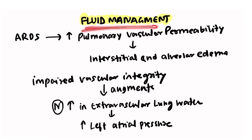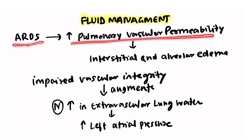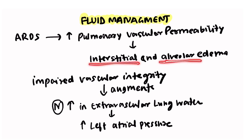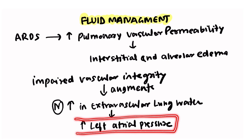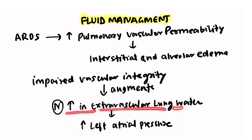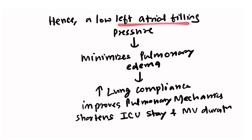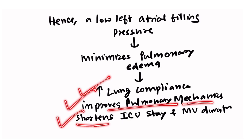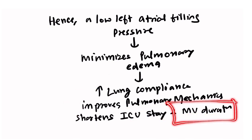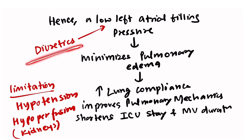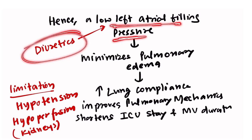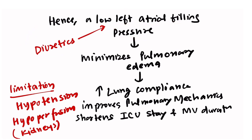In ARDS there is increased pulmonary vascular permeability leading to interstitial and alveolar edema. Increased left atrial pressure further increases extravascular lung water, and since vascular integrity is impaired in ARDS, this edema is augmented. A low left atrial filling pressure minimizes pulmonary edema, improves lung compliance and pulmonary mechanics, and shortens ICU stay and mechanical ventilation duration. Diuretics can help by reducing left atrial filling pressure, but are limited by risks of hypotension and hypoperfusion of critical organs like the kidneys.